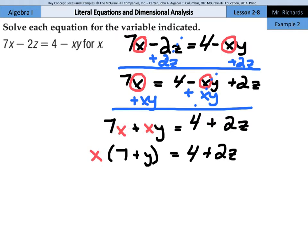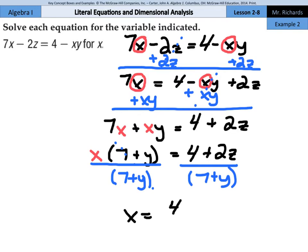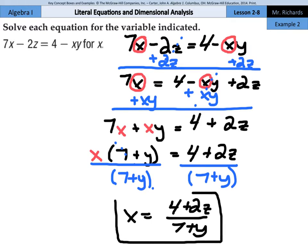Now, why does this help us? Well, this is multiplication here, and the opposite of x times the 7 plus y is using division. And if I divide this 7 plus y from both sides of my equation, this one now cancels out, and I'm left with x equals the 4 plus 2z all over 7 plus y. And that is solving the equation for x, when you have x on both sides to start.